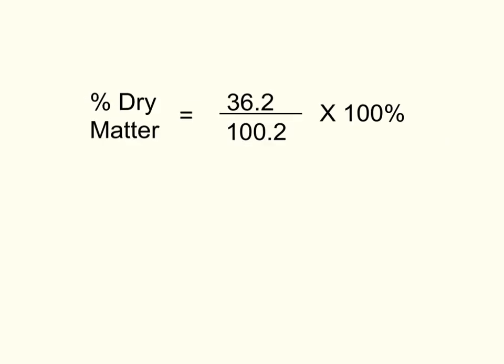Now to plug in our numbers. You may recall from Wes's example that his wet sample was 100.2 grams. And after the sample had had an hour to dry in his oven, he found that the weight of the dried sample was 36.2 grams, which meant that a large amount of that sample was water, which was driven away in the heating process in the oven.